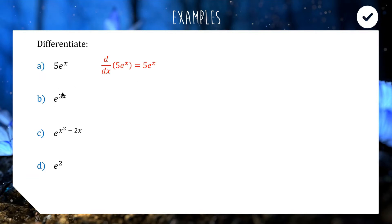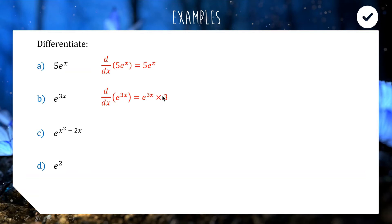Example b is a little different because the power is not just x — it's 3x. When we find the derivative of e to the 3x, the exponential term stays the same, we still have e to the 3x, but now we multiply by the derivative of the power. The derivative of 3x is 3, so we multiply by 3 and get 3e to the 3x as our final answer.